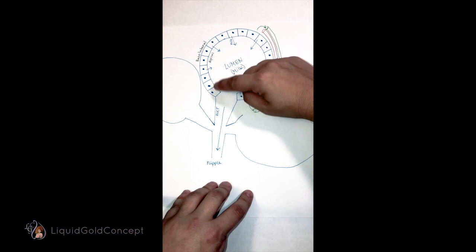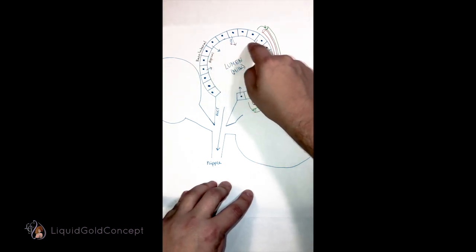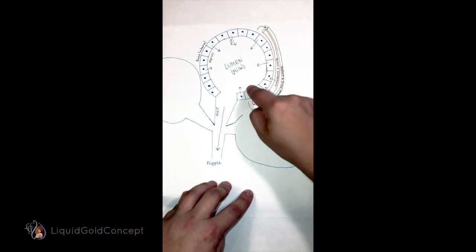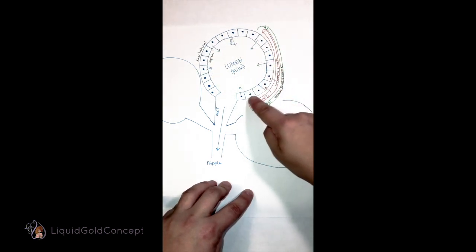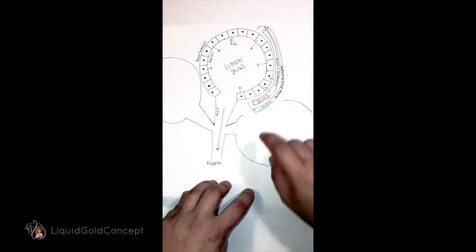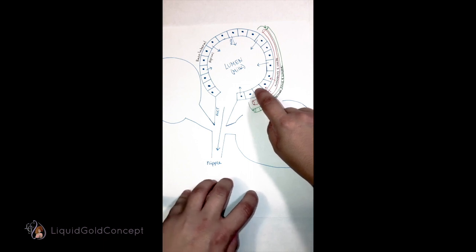We label the two sides of the epithelial lining as apical, which is towards the center or towards the lumen, and basolateral, which is the side towards the blood and lymph vessels. This will become important as we dive even deeper looking into this at the cellular level.